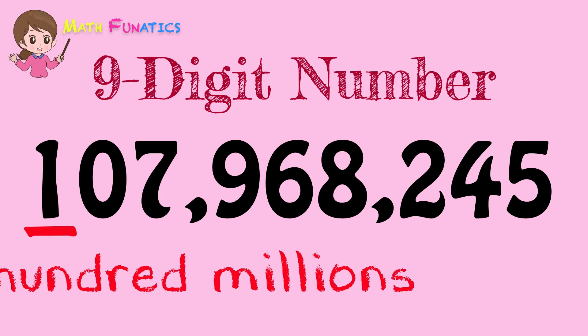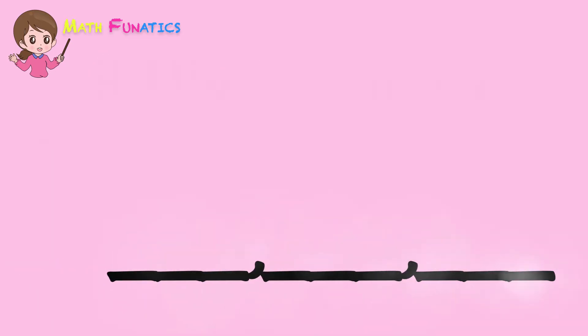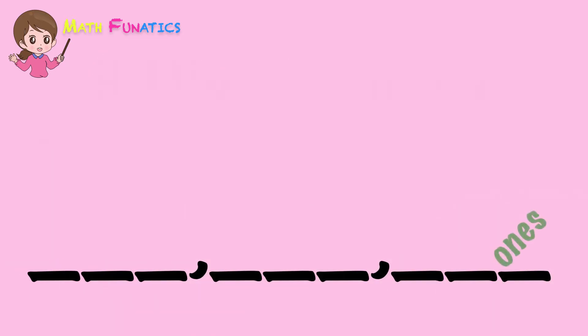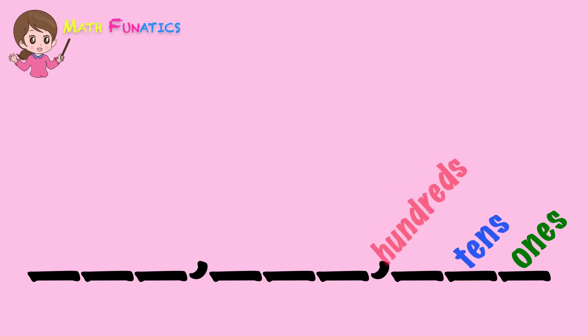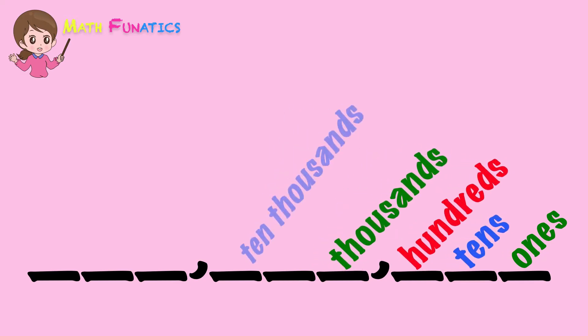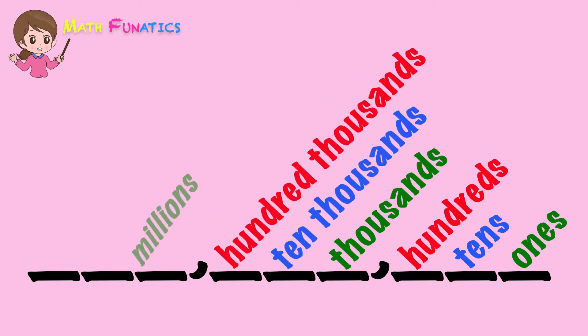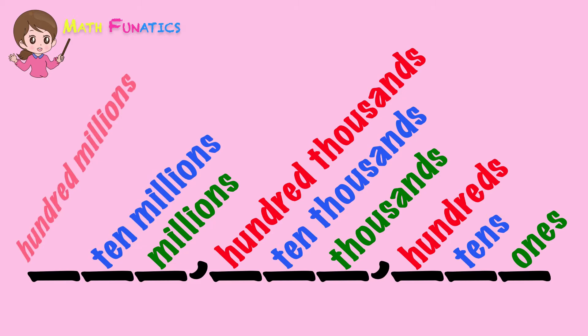And finally, 1 is in the hundred-millions place. Let us list down the different place values that we've learned: ones, tens, hundreds, thousands, ten-thousands, hundred-thousands, millions, ten-millions, and hundred-millions.